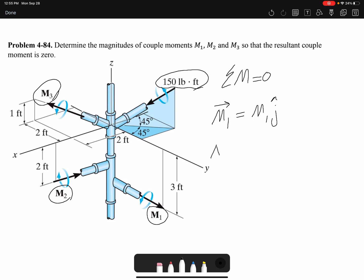M2, I don't know the magnitude but I know the direction is towards negative x, so that would be negative M2 i.